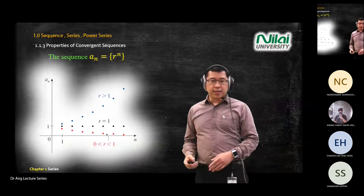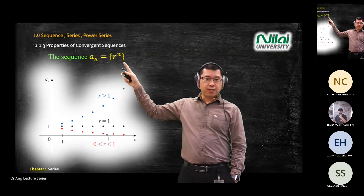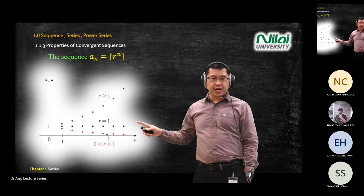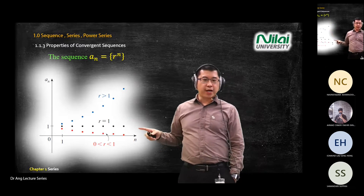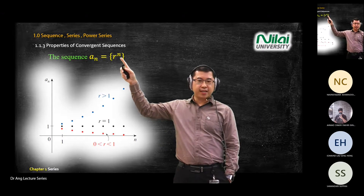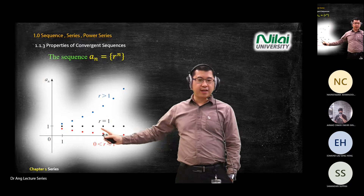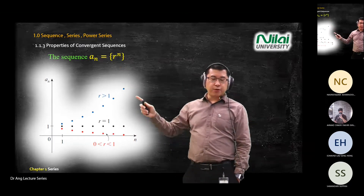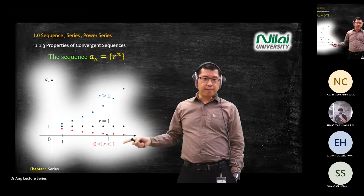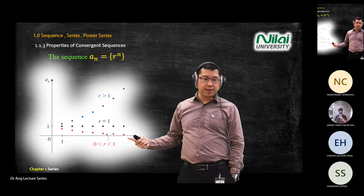Now a new type of sequence: r^n, the power series. We have three sets of data. What happens if r equals one? No matter how you change n, you will always get one — a straight line. Your data always arrives at one.